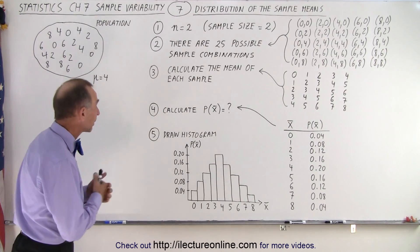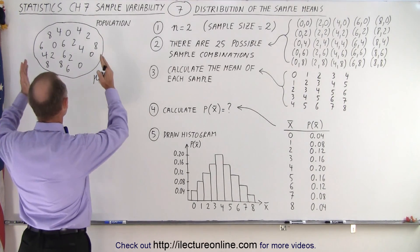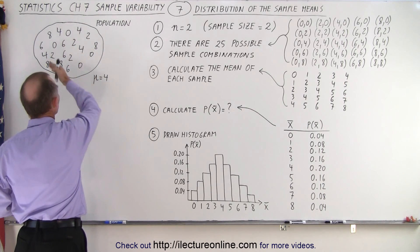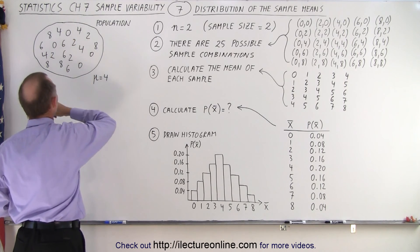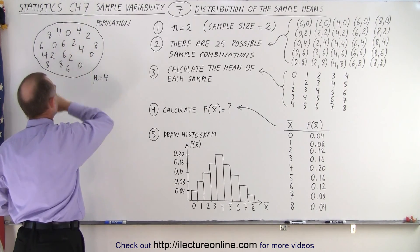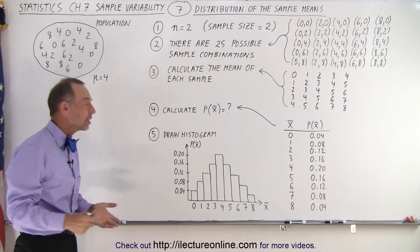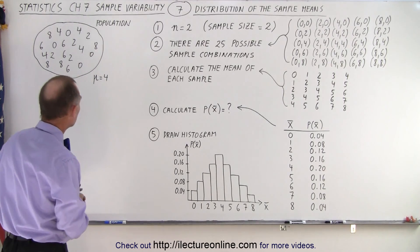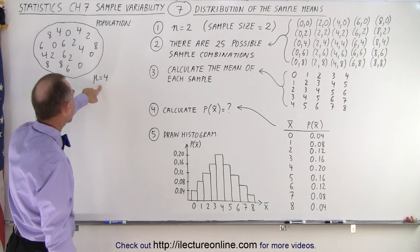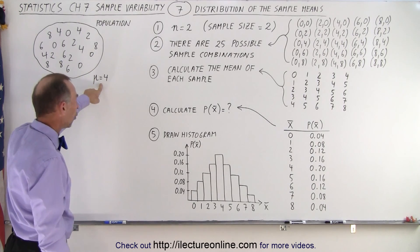In this particular case we're dealing with a population. The members of the population — the elements in the population — can be 0, 2, 4, 6, or 8. There are multiples of each. Notice that the mean or the average in the population is equal to 4.